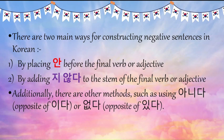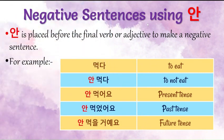Now we are going to discuss, one by one, these two main ways for constructing negative sentences in Korean. Let's start with 'an'. How to make negative sentences using 'an'? As I said, 'an' is placed before the final verb or adjective. For example, we have the verb 'makta', which means 'to eat'. So its negative form would be 'an makta', meaning 'to not eat'. We know how to conjugate in the present, past, and future tense. In present tense it becomes 'an maugayo', past tense 'an maugasayo', and in future tense 'an maugul koyayo'. You just have to place 'an' before the verb or adjective — it is a very simple way to create negative sentences.